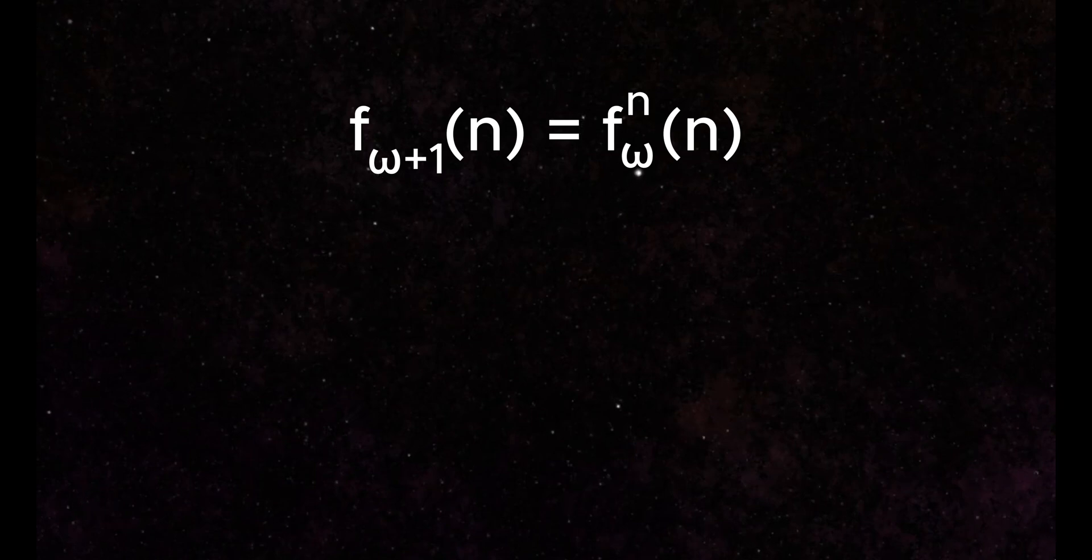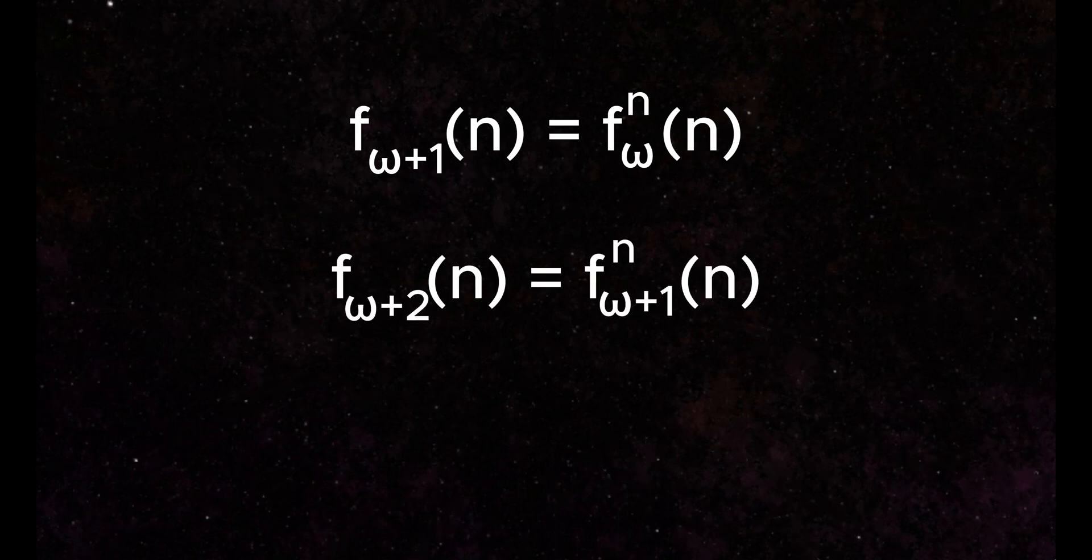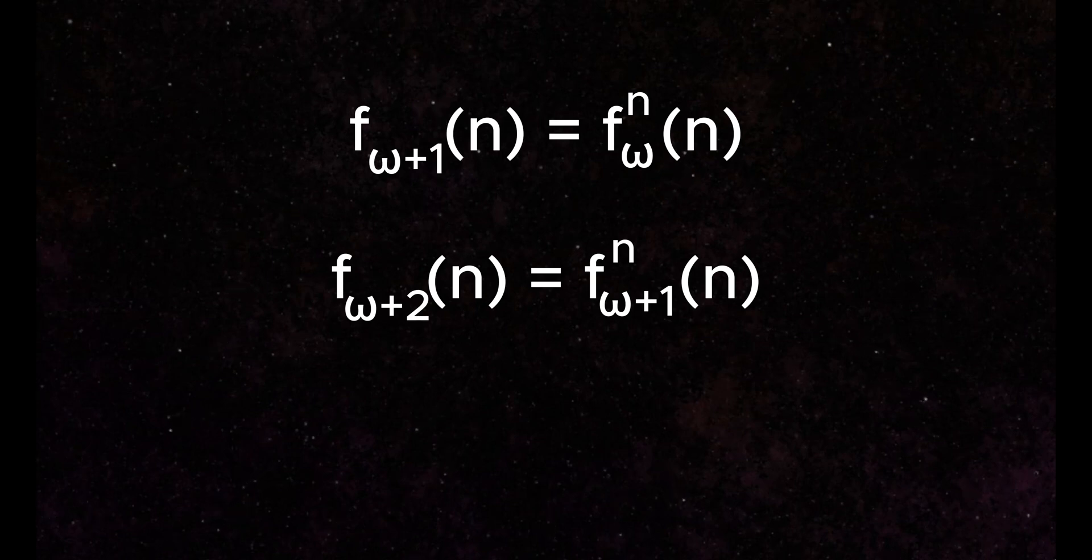Exactly how much faster is it? Well, if we start with the f_omega+1 function, we see that it just iterates over the previous function. Likewise, we can add another 1 to this omega to get a function that iterates over f_omega+1. And we can continue going in this fashion, building faster and faster growth functions.